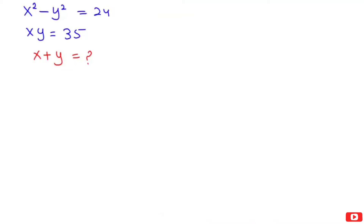Hi, welcome back to my channel. In this video, I'm going to solve a nice algebra equation. x squared minus y squared is equal to 24, and xy is equal to 35. Here we are going to find out the value of x plus y. So let's start our solution.